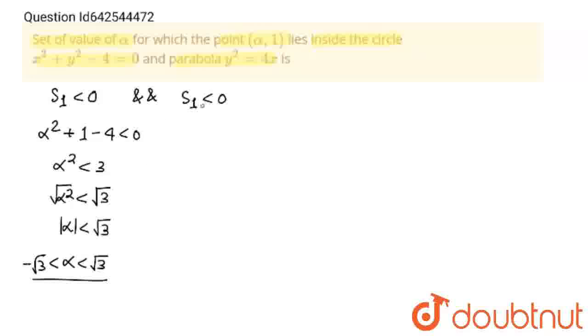Now I am going for the second equation. Here I will put 1 at place of y. This will become 1 squared minus 4 alpha, and I will bring 4x to this side, so minus 4 alpha should be less than 0.